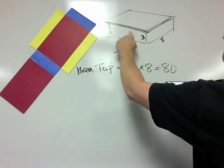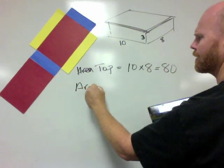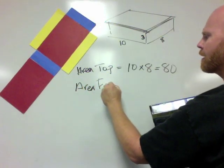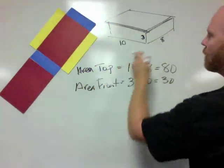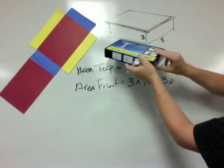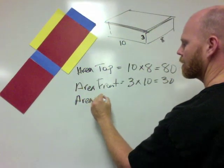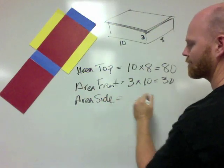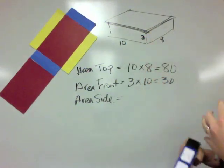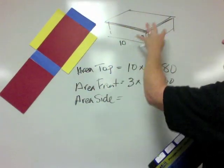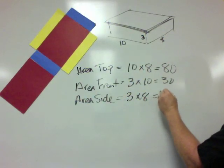Now if we want to find the area of the front, this piece right here, this is 3 by 10. So let's call that the front. Area of the front is 3 by 10, which is 30. And then over here we've got the side. So that's going to be the 3 by 8. These are all silly made up names that I'm making up, but it's not important, really mathematically speaking, other than to just kind of keep us organized. And the area of the side is 3 by 8, which is 24.